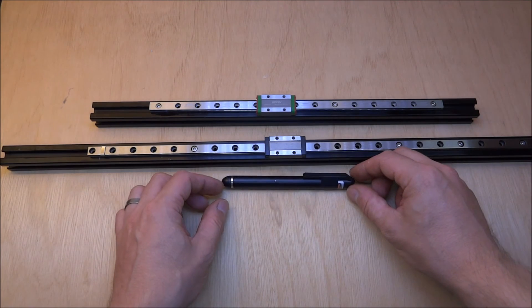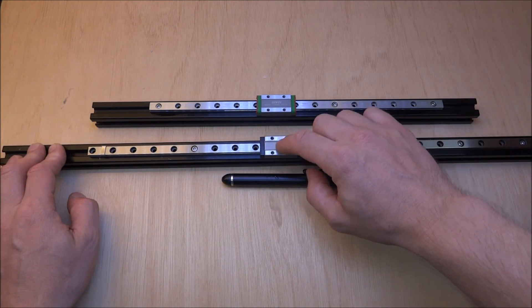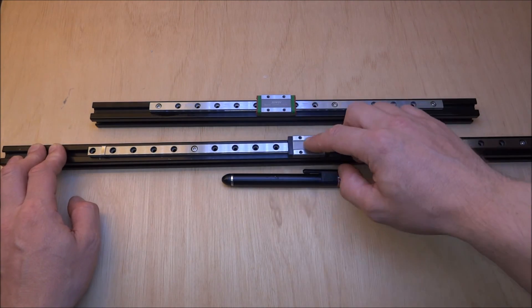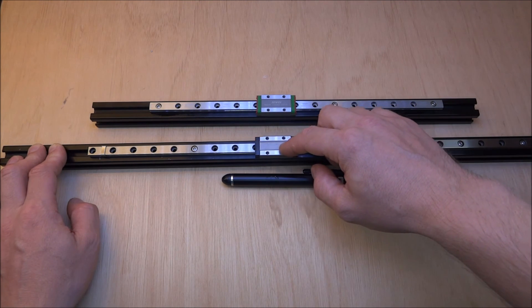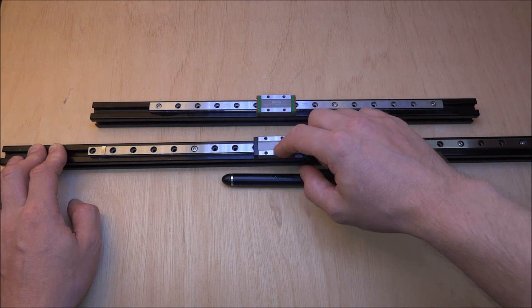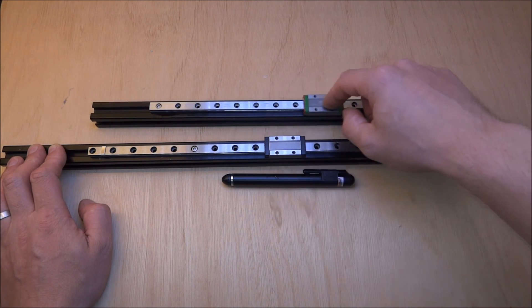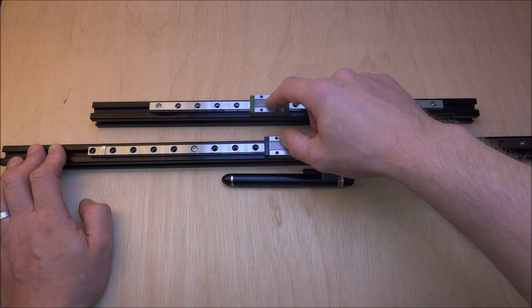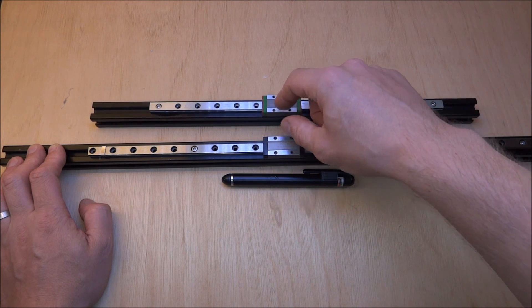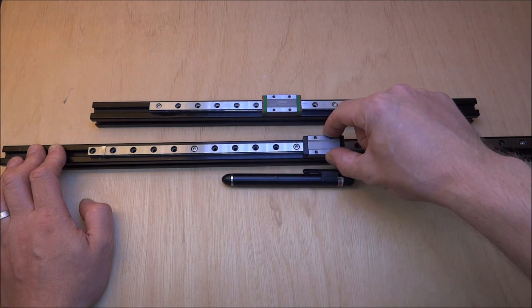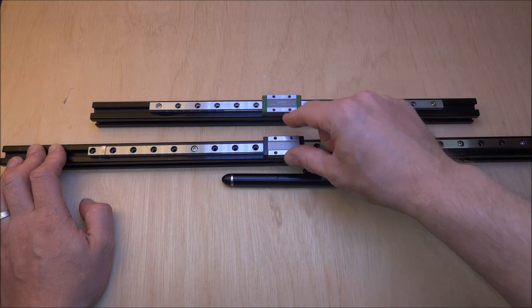My original aim was working out whether the RobotDig rails were good enough to justify the fraction of their price compared to the Hiwin ones, or whether the Hiwin ones were worth splurging the extra for. I'm happy with both, and I'll probably look to get some RobotDig ones for the Z axis now.